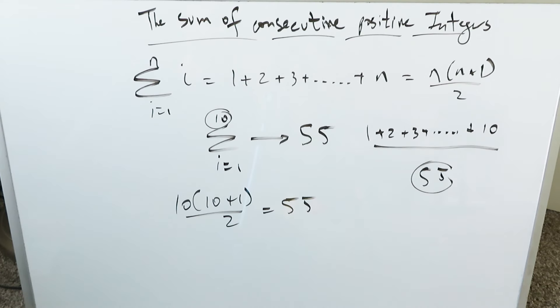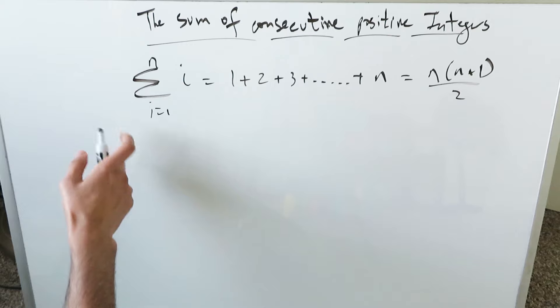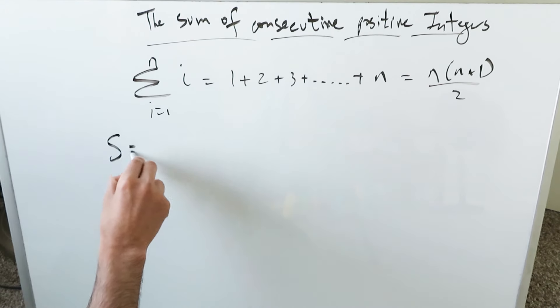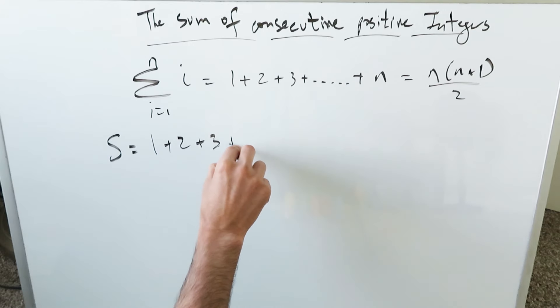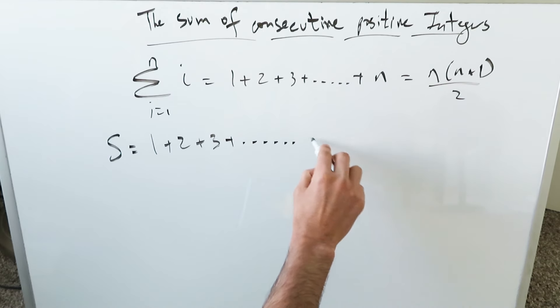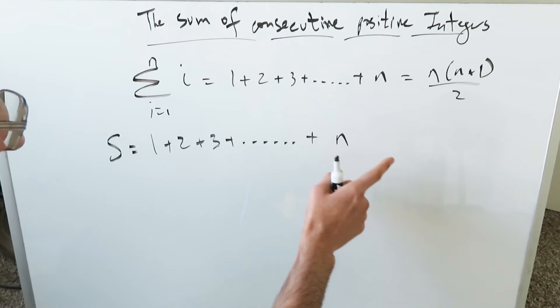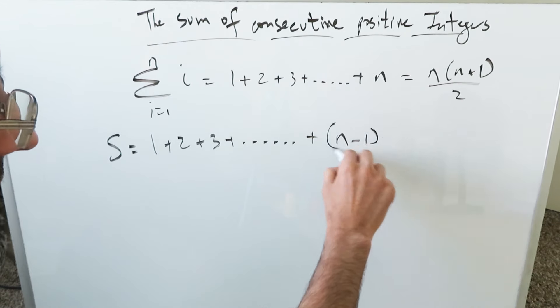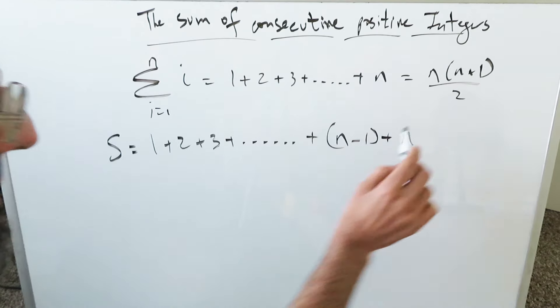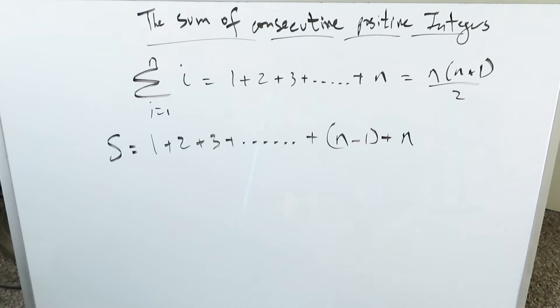Now I will show you how this formula is derived. Based on this representation, there's a specific sum. If you were to expand it out, you're looking at 1 plus 2 plus 3 plus some number going up to n. You see that n? But what would have been the number right before that n? It would have been n minus 1, and the terminal number would have been n.